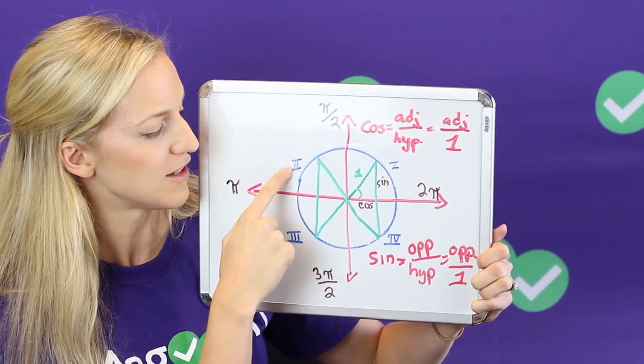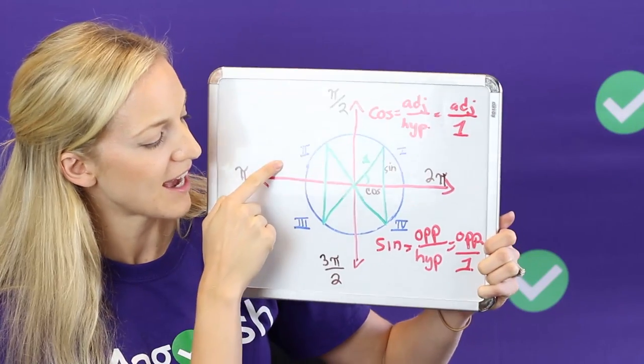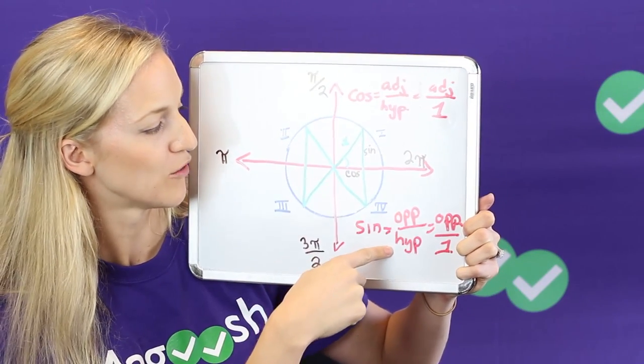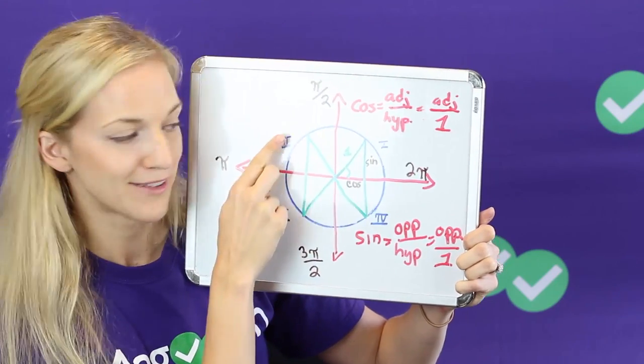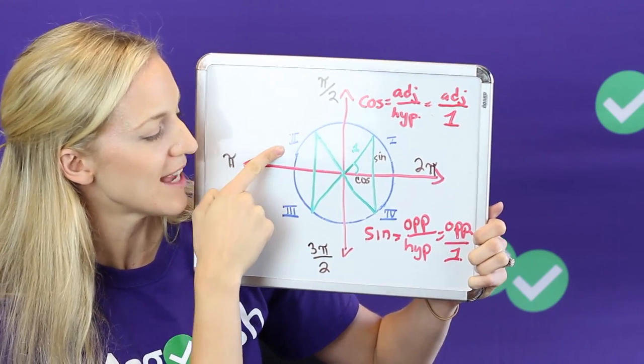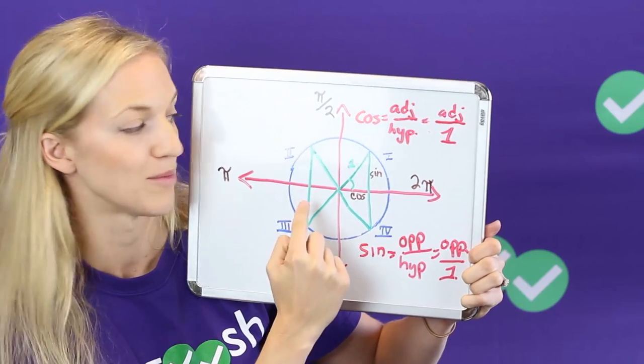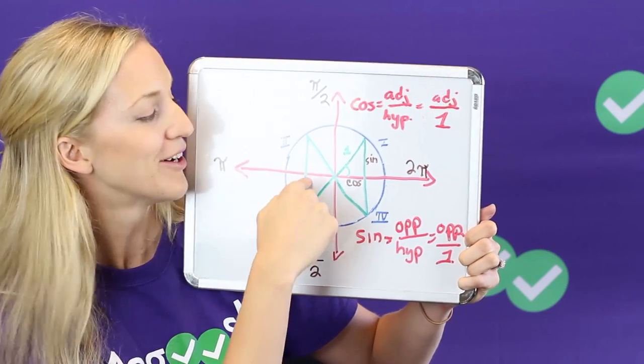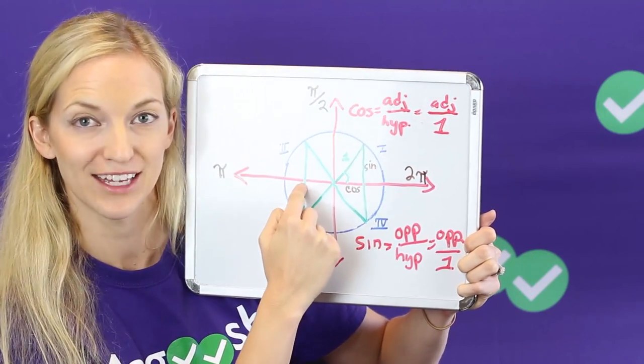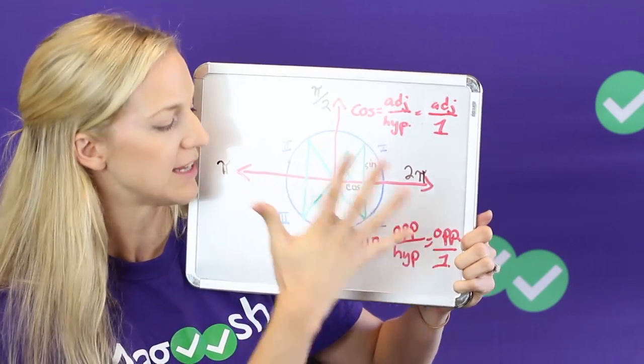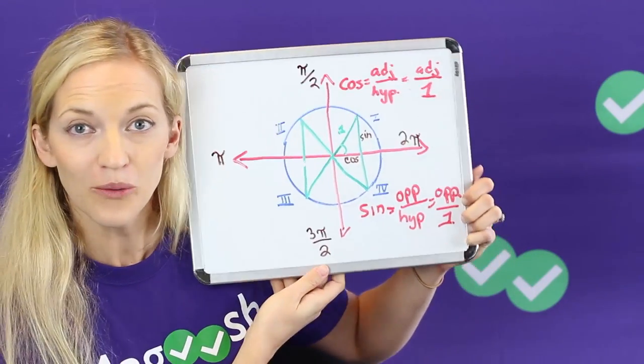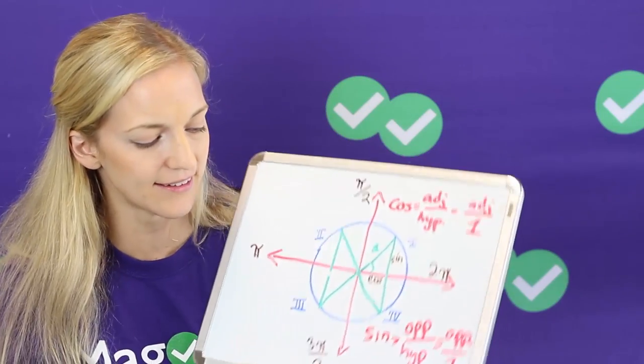So the sine here is positive because we're above the x-axis and the sine is opposite over hypotenuse, so our opposite side is positive. Cosine here is negative because cosine has to do with the x-axis, with the bottom, because we're talking about adjacent over hypotenuse and that would be negative. So you can use that to figure out positive and negative in the other quadrants or you can use this handy little mnemonic.